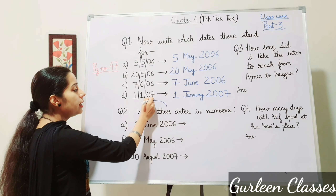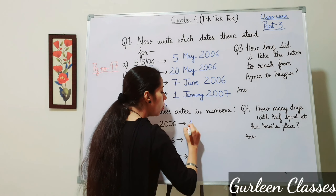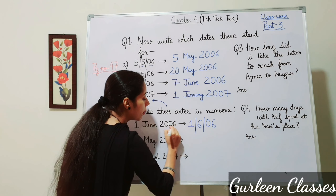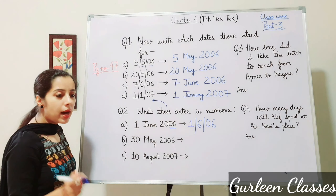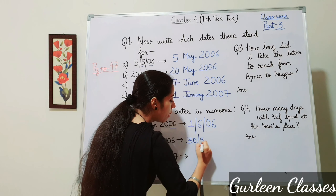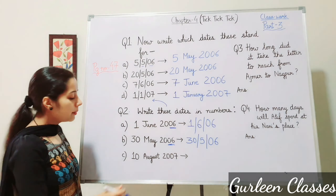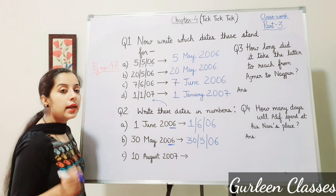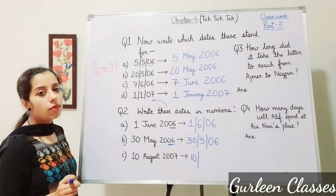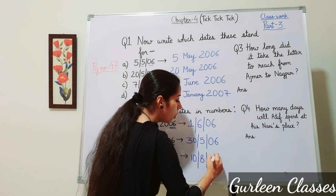Part A: 1st June 2006 — we write 1 then 6 then 06. Part B: 30th May 2006 — write 30/5/06. Part C: 10th August 2007 — 10 is the date, August is the 8th month, so we write 10/8/07.